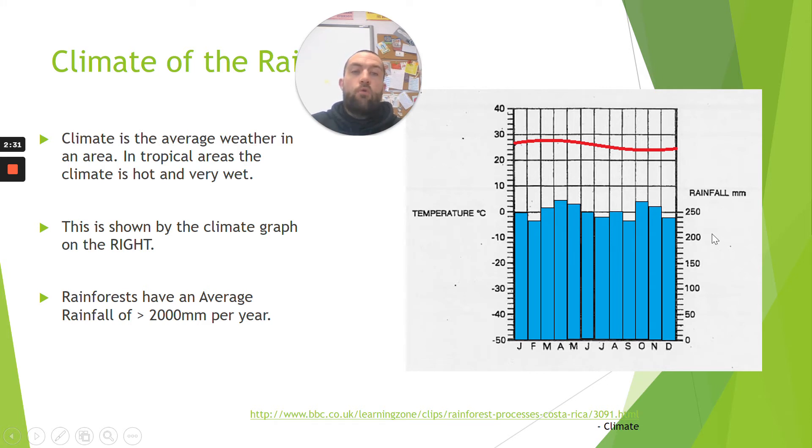So rainfall is shown by the blue bars. Now think of it, if it was raining these bars would fill up with water. Temperature is shown by these line graphs here, this red line. Think red equals warm, blue equals water. That's a good way of remembering that.